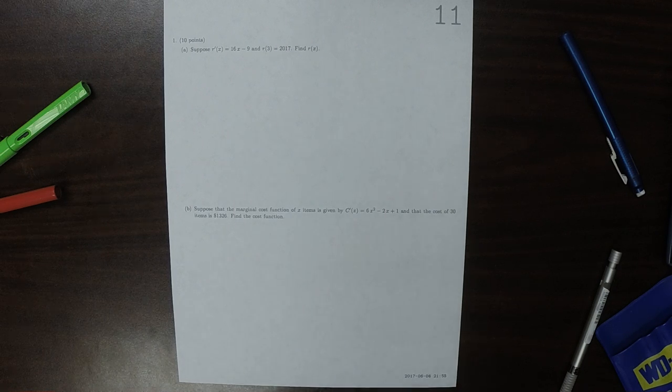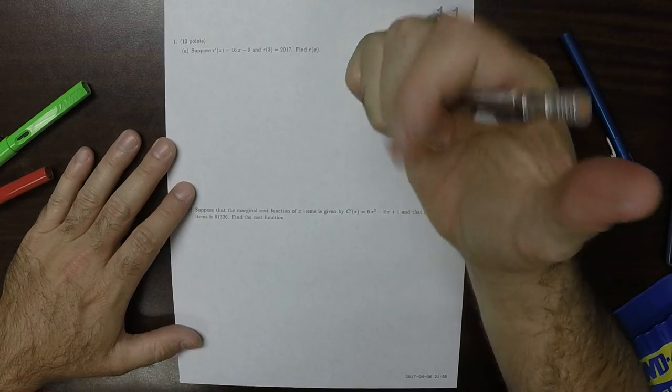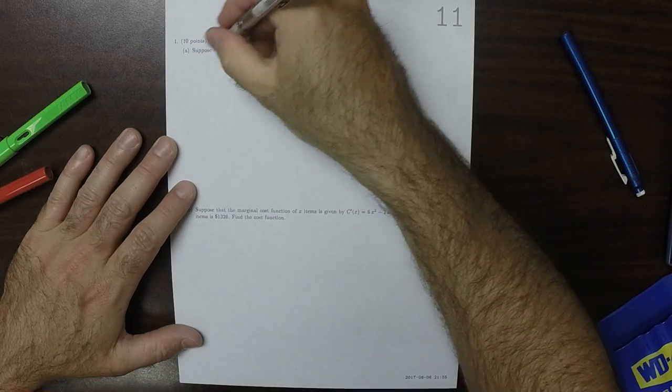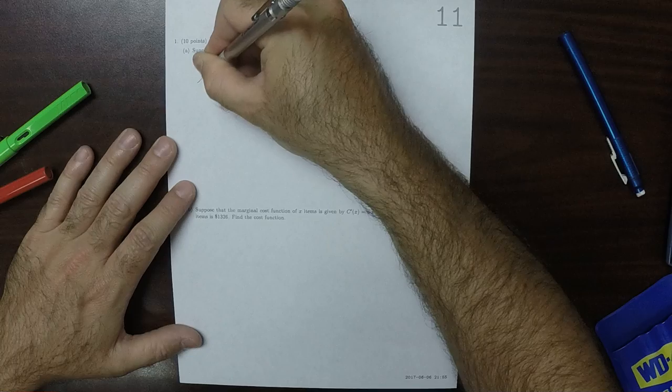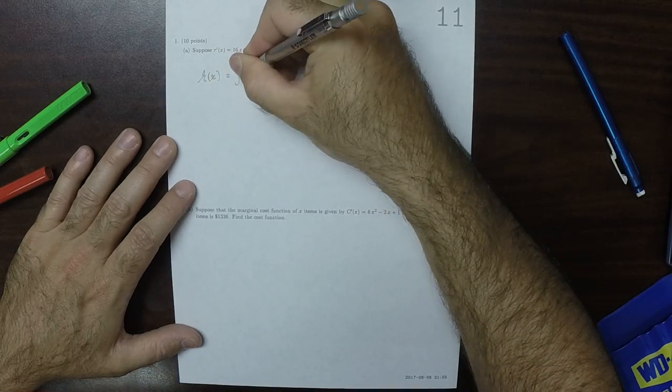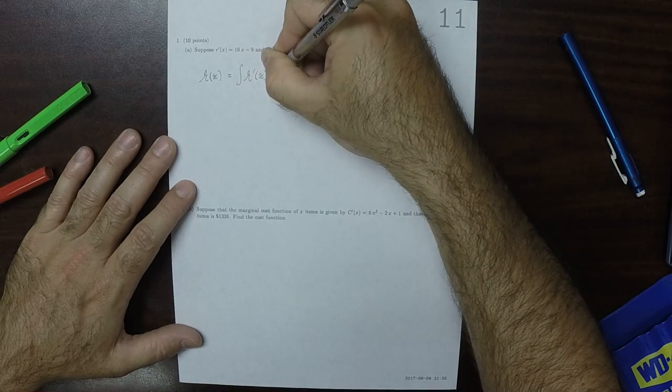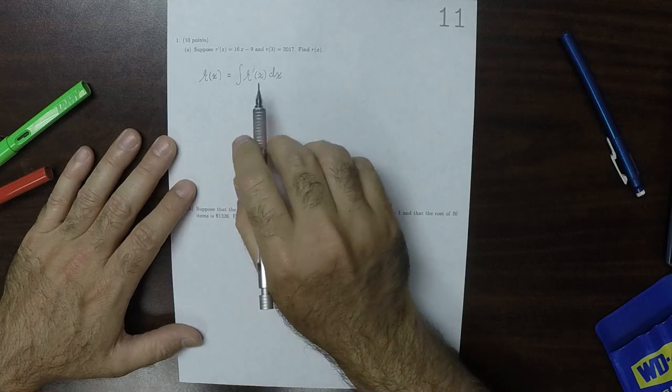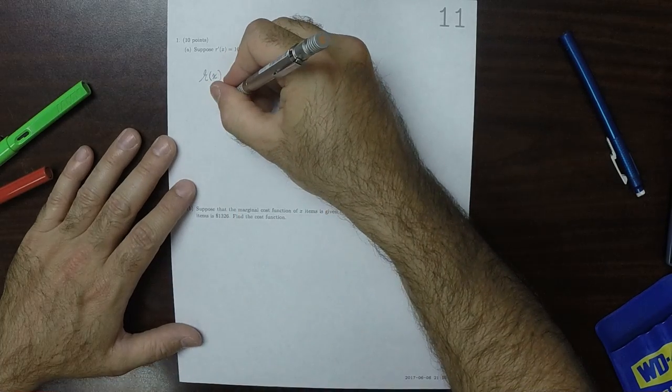This is the solution to written homework 11. Well, we can always get r back, so r of x is equal to the antiderivative of the derivative of r of x. So if a function has been differentiated, you can get it back by anti-differentiating the derivative.